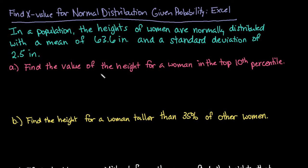So what we have here is in a specific population the heights of women are normally distributed with a mean of 63.6 inches and a standard deviation of 2.5 inches. So remember that you need to know the mean and the standard deviation in order to use the normal distribution and to be able to find the x values.